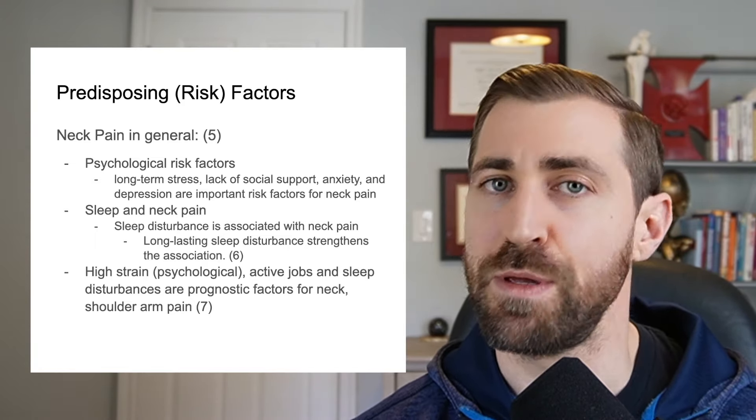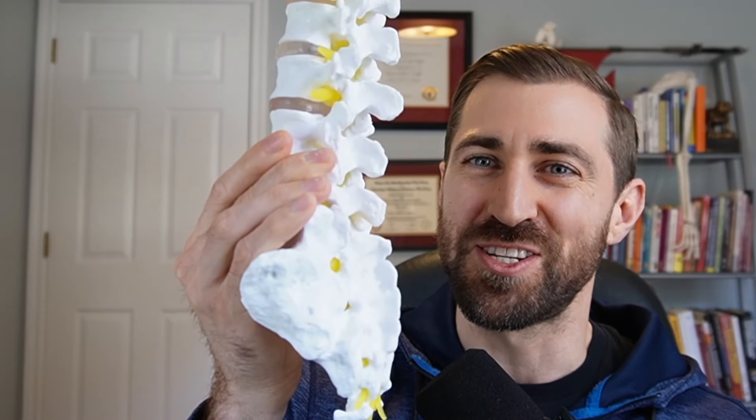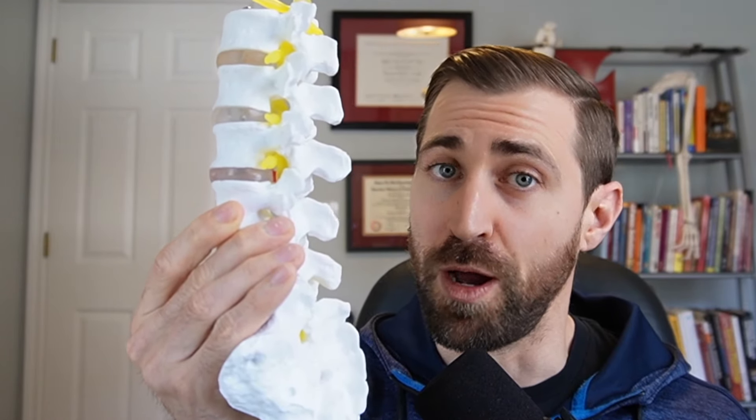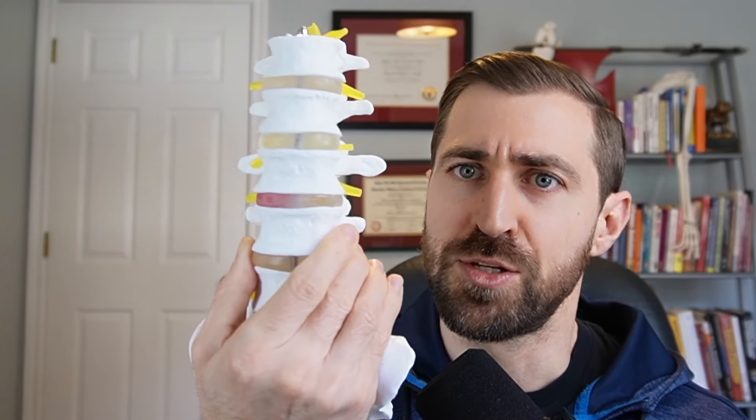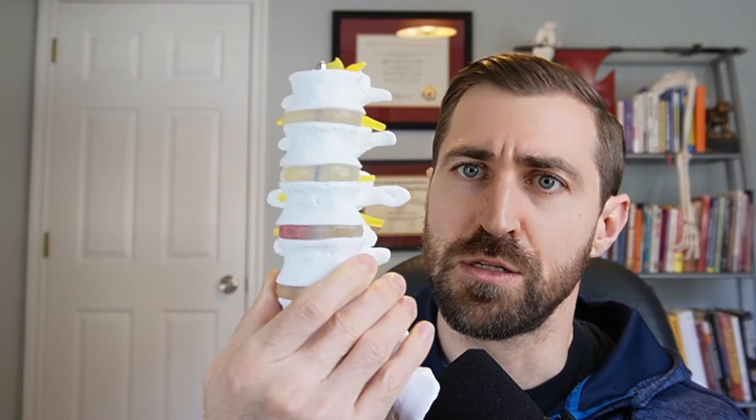Let's go over some anatomy relevant for cervical radiculopathy. I'm using a lumbar spine model here because the cervical spine model is quite small and the intervertebral foramen is hard to see. Just to orient you: this is the front of the spine, this is the back, these are the spinous processes, and these are the transverse processes on the side. The yellow structures are nerves exiting. The space they exit through is called the intervertebral foramen — you can see the nerve exits right in that spot.